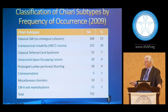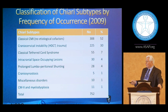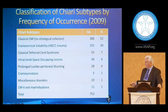Lumbar peritoneal shunting, which Dr. Fuchs and Dr. Rickey talked about, was about 4%. Cranial synostosis cases, much less, as well as forms of Chiari 2 and patients with myelodysplasia. So that was a total of almost 750 patients.